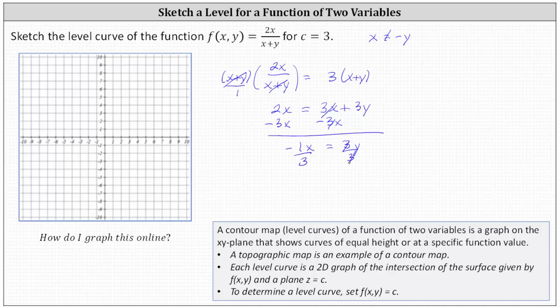The level curve for c equals 3 is the line y equals negative 1 third x, which we should recognize as a line in which the y-intercept is zero and the slope is negative 1 third.